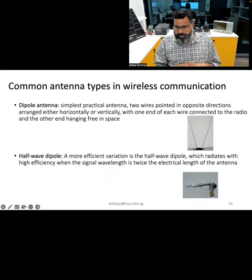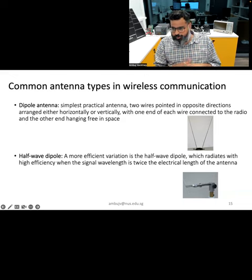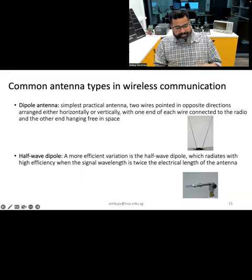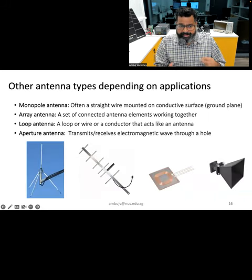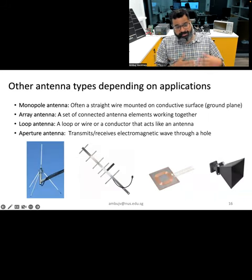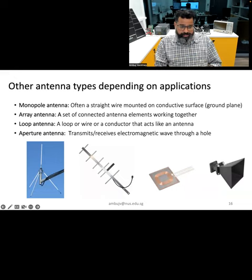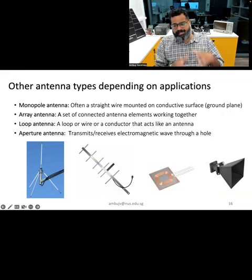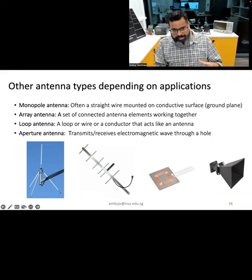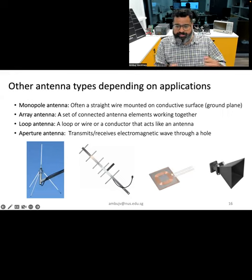Antennas come in very different types, each with its own unique characteristics and uses. Common examples include the dipole antenna and its variation, the half-wave dipole. There are also Yagi antennas and patch antennas, which can be placed on objects like sticker form factor sensors. The specific choice of antenna depends on several factors such as device form factor, the specific application, the wireless technology being used, and several other considerations.